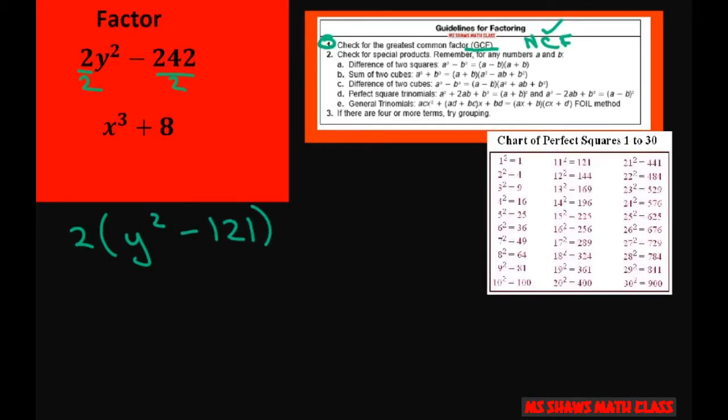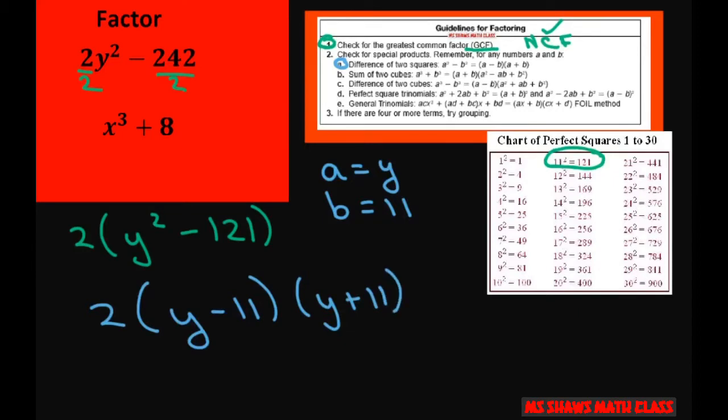Here I notice that 121 is a perfect square. So basically I'm going to use this. My a is y and my b is going to be the square root of 121, which is 11. So you're just going to write this as 2 times y minus 11 times y plus 11. By the way, you can also write this as, it doesn't matter the order. You could write it as y plus 11 times y minus 11 because it's all multiplication.